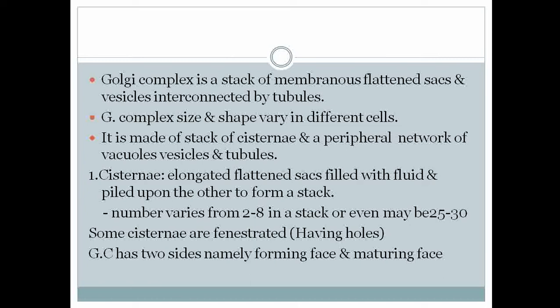The first component of the Golgi apparatus is the cisterni. These are elongated, flattened sac-like structures filled with fluid, present one upon the other, forming a stack. The number of cisterni in the stack varies from 2 to 8, and sometimes may be 25 to 30. Some cisterni are fenestrated, meaning they have holes.